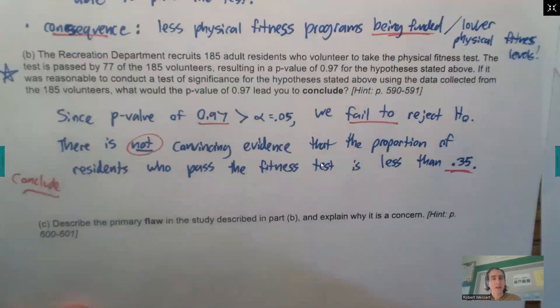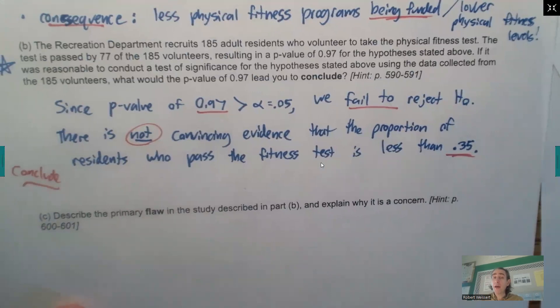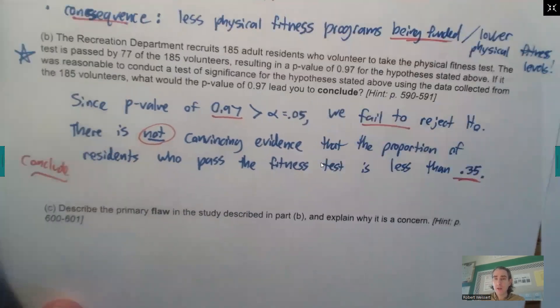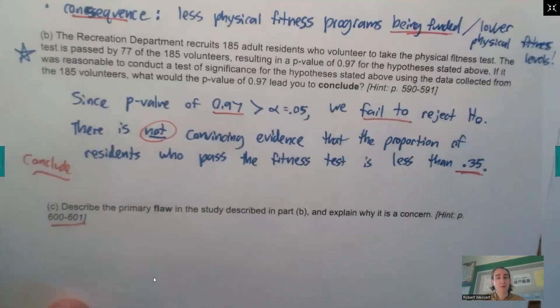All right. Read through part C. Describe the primary flaw in the study described in part B and explain why it is a concern. And you can find a hint on page 600 to 601 if you need it from your textbook. Pause the video and try it on your own.